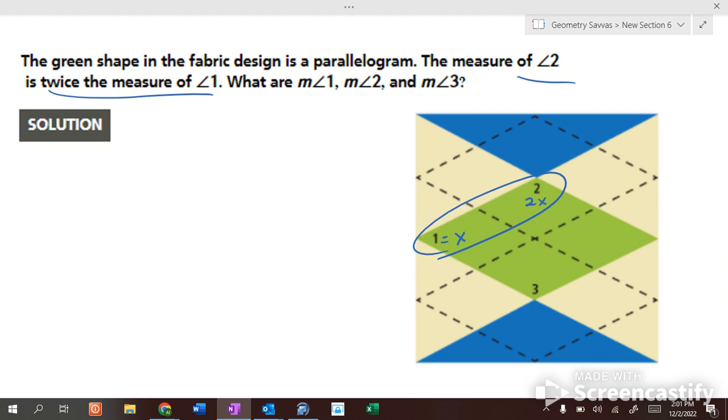What do we know about these two angles? They are supplementary. x plus 2x equals 180. 3x equals 180. Divide by 3. x equals 60. So angle 1 is 60. Angle 2 is 120. Angle 3 is 120.